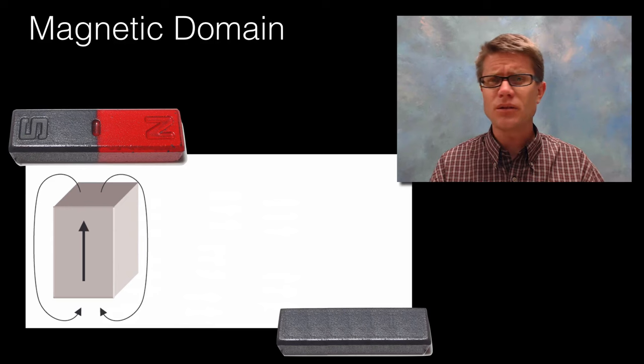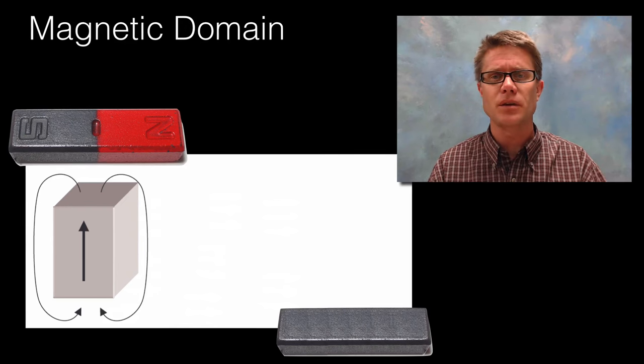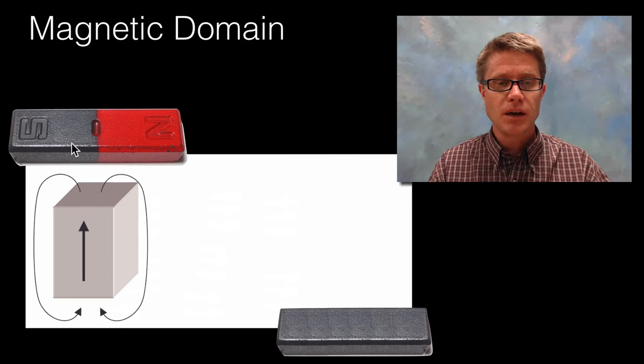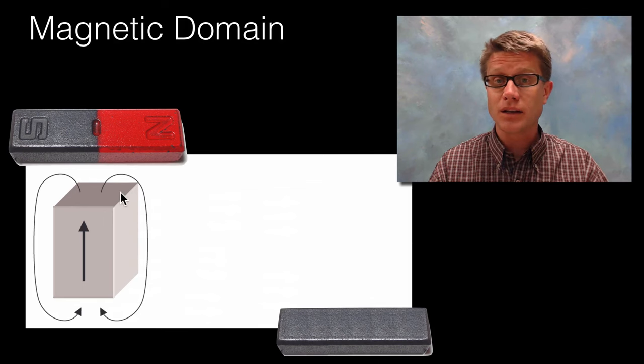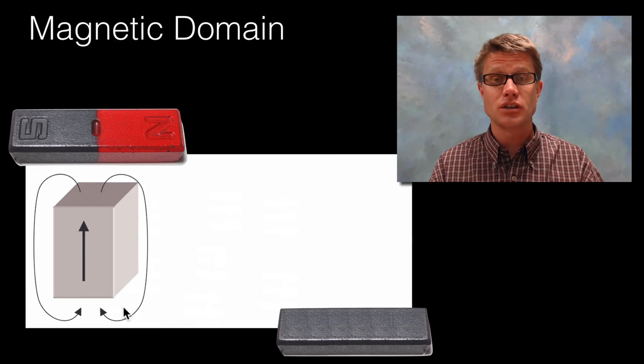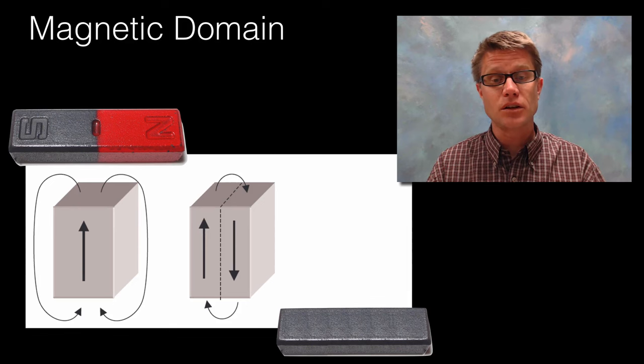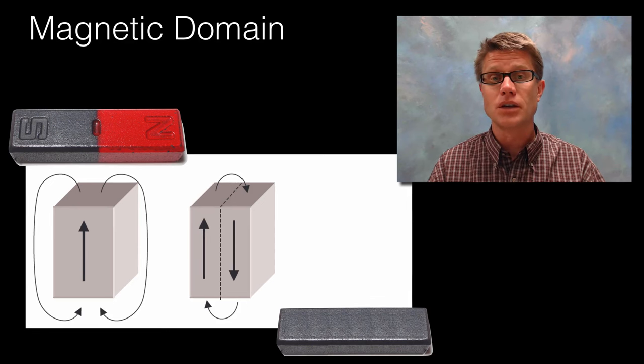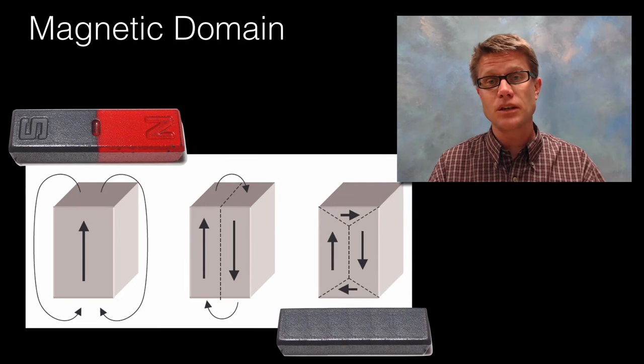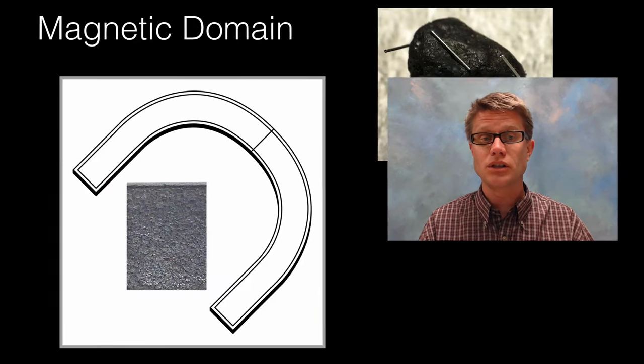A question that might jump to mind is why do we even have magnetic domains? What's the purpose of having these tiny magnets within magnets? It's an energy question. A magnet creates these giant magnetic fields around the outside of it, using magnetostatic energy is what scientists refer to it. If we can start breaking that down into smaller magnets we're reducing the amount of that magnetic field and we're reducing the amount of energy. If we get a bunch of these domains we've actually eliminated that overall increase in energy. It's at a lower energy state.